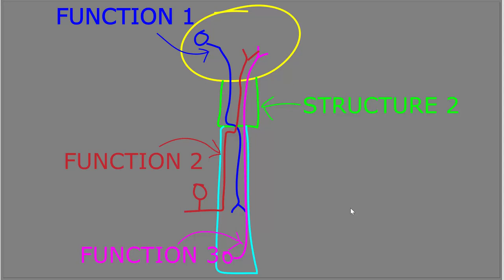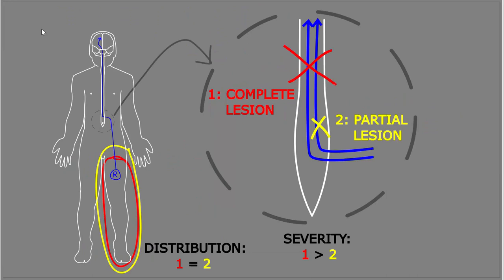Confusingly, there are often multiple terms used for the same neural structures or functions. I will usually use only one for brevity, but I'll try to mention common synonyms when the terms first arise.